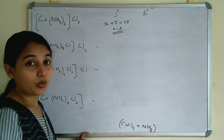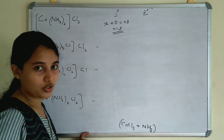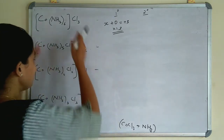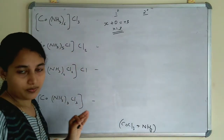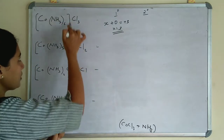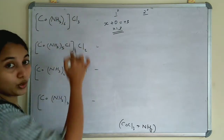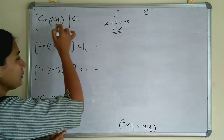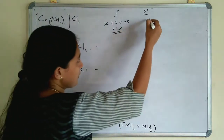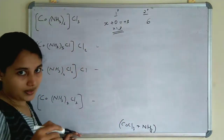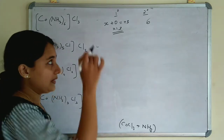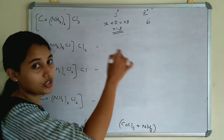So the primary valency of Co is 3. And secondary valency is coordination number — the total number of donor atoms. This is the coordination sphere; in a previous video we discussed coordination number. In this coordination sphere, 6 donor atoms are present, so the secondary valency is 6. The primary valency is the oxidation number of the metal atom and secondary valency is the coordination number.